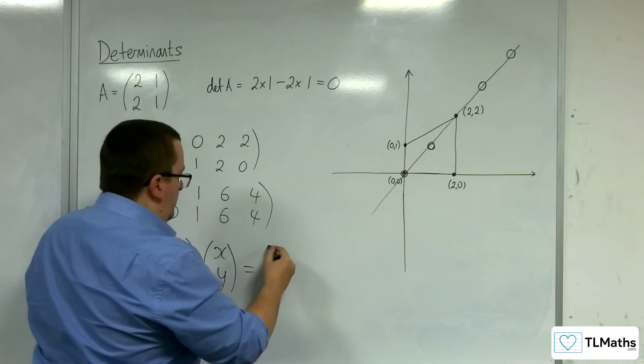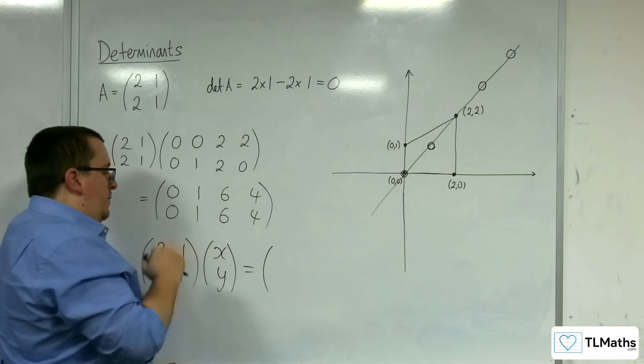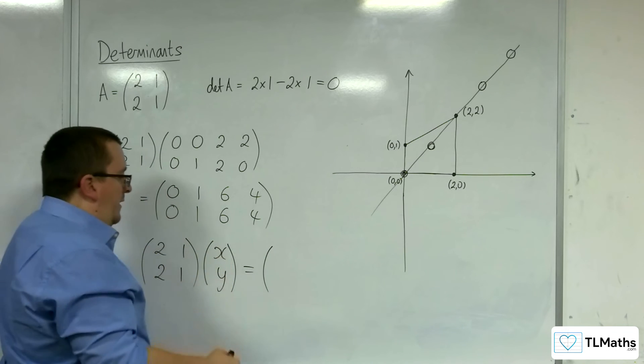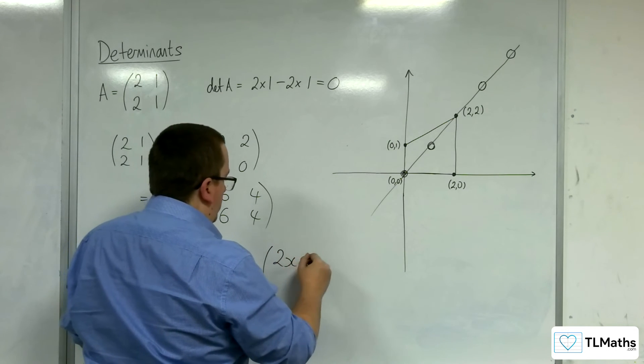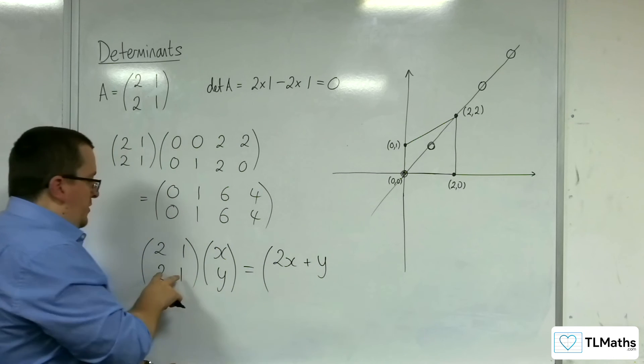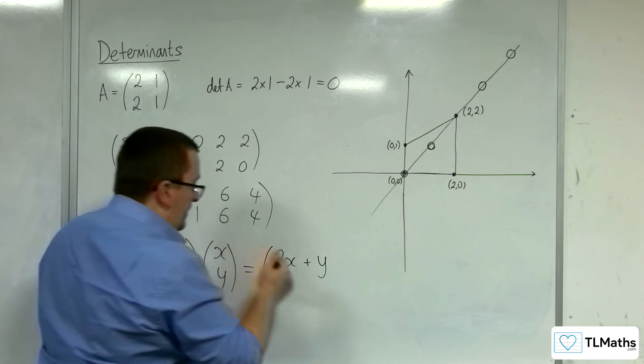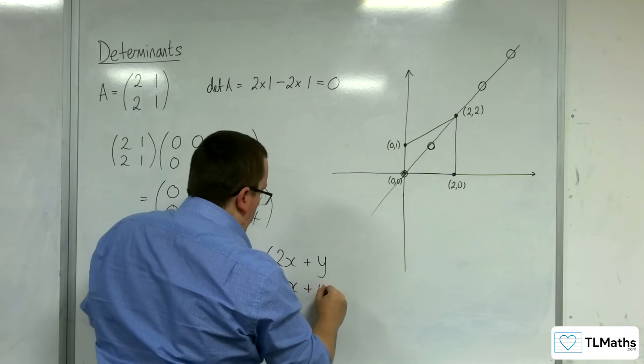OK, so what would we get? 2, 1 multiplying with the X and Y, so we can get 2X plus Y. And 2, 1 being applied to the X, Y, 2X plus Y.